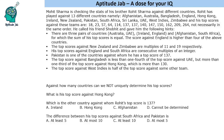Hello everyone, welcome to Aptitude Jab. This is a caselet. It says that Mohit Sharma is checking the stats of his brother Rohit Sharma against different countries. Rohit has played against 13 different countries. So the names of countries are given and the top scores against these teams, not necessarily in the same order. Mohit is telling his friend, giving some hints about the top scores of Rohit Sharma.